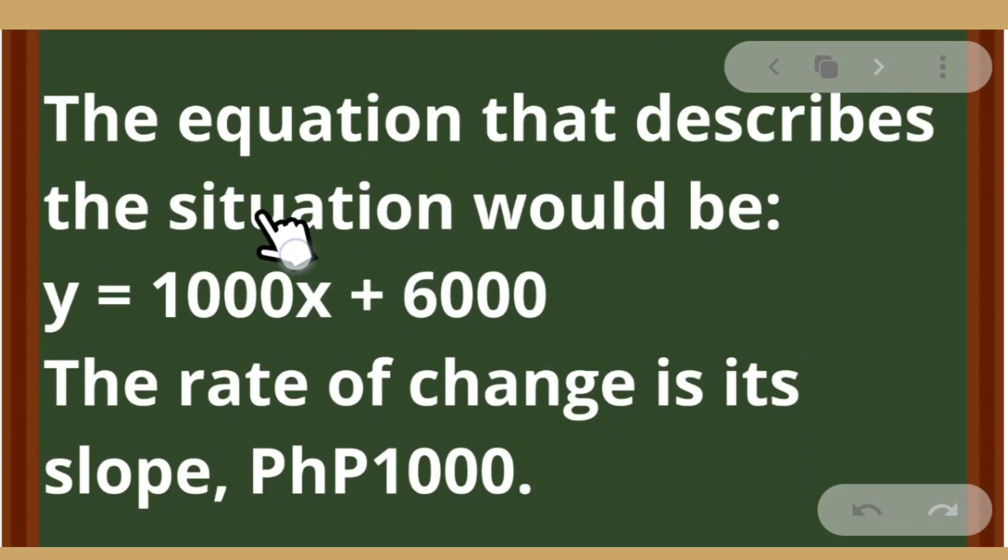What will be the rate of change? The equation that describes the situation would be y is equal to 1,000x plus 6,000. This 6,000 is the installation fee and 1,000 the payment each month. So we have this equation y is equal to 1,000x the number of months plus 6,000 the installation fee. And then, this y the total payment after x number of months.